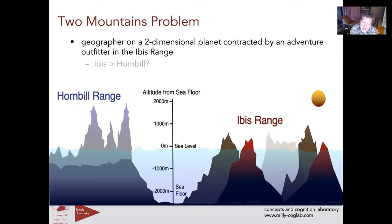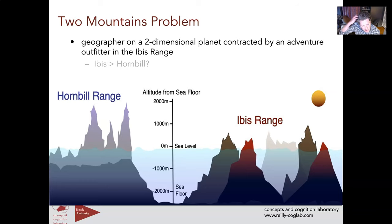I want you to imagine that you are a geographer working on a fictional two-dimensional planet that has two mountain ranges: the Hornbill Range and the Ibis Range. Your task is to figure out which of these mountain ranges is higher or bigger. The Ibis Range starts under the sea; the Hornbill Range looks higher, but maybe the Ibis Mountains actually have a higher base-to-peak. That is basically the same problem as pupillometry.